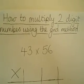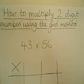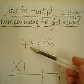How to multiply two-digit numbers using the grid method. OK, so I'm going to multiply together 43 and 56.